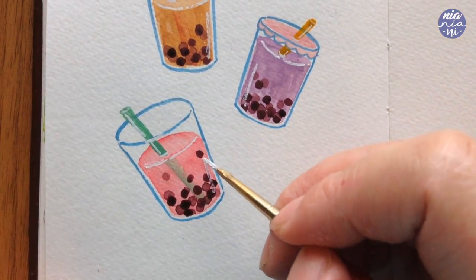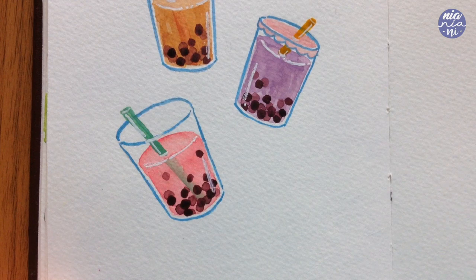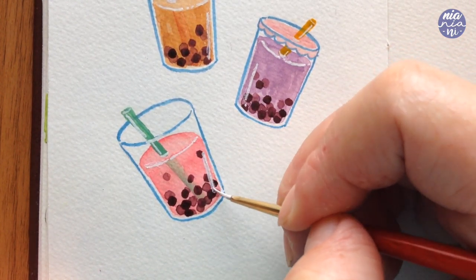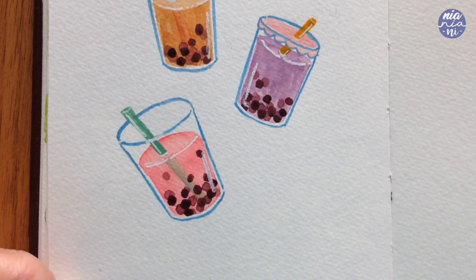And I also added a little bit of white to separate the shapes of the top of the drink and the sides. And I'm also going to add a bit more highlight on the cups.